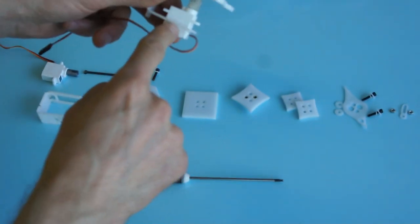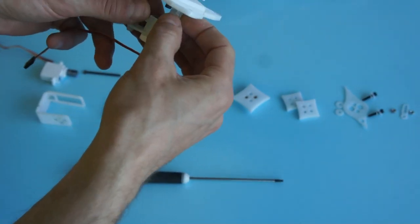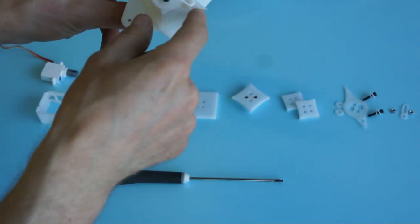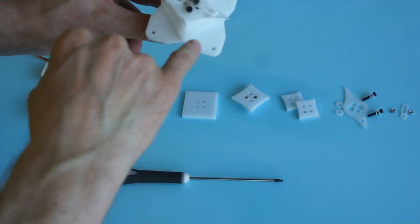This module has a servo on the bottom that actuates the top tooth to turn and guide the carriers moving past it.